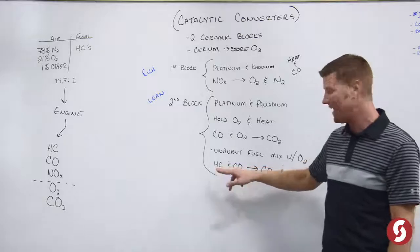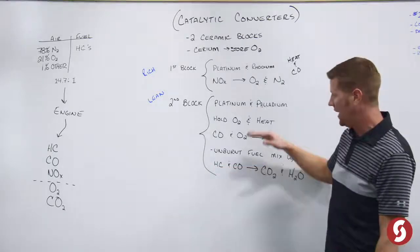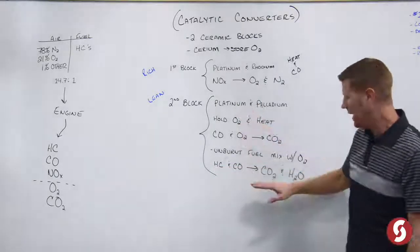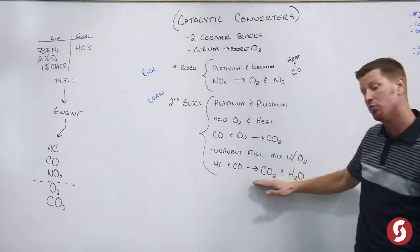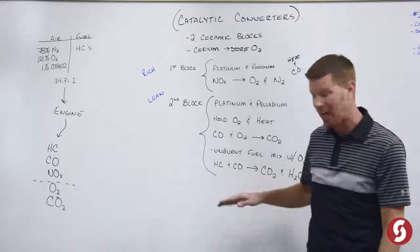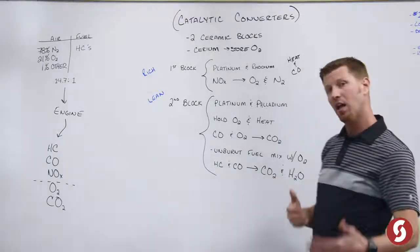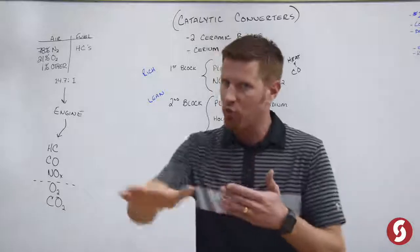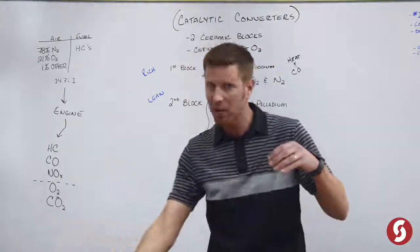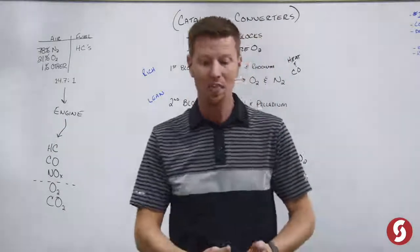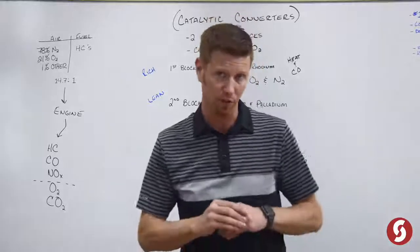Now we also have unburnt fuel. Unburnt fuel is going to be hydrocarbons and carbon monoxide. So the oxygen from this part is going to help change this into CO2, which is carbon dioxide, and water. So a lot of times you'll notice when somebody drives away you'll see water dripping out of the tailpipe. That is because of the chemical reaction that's happening inside the catalytic converter.